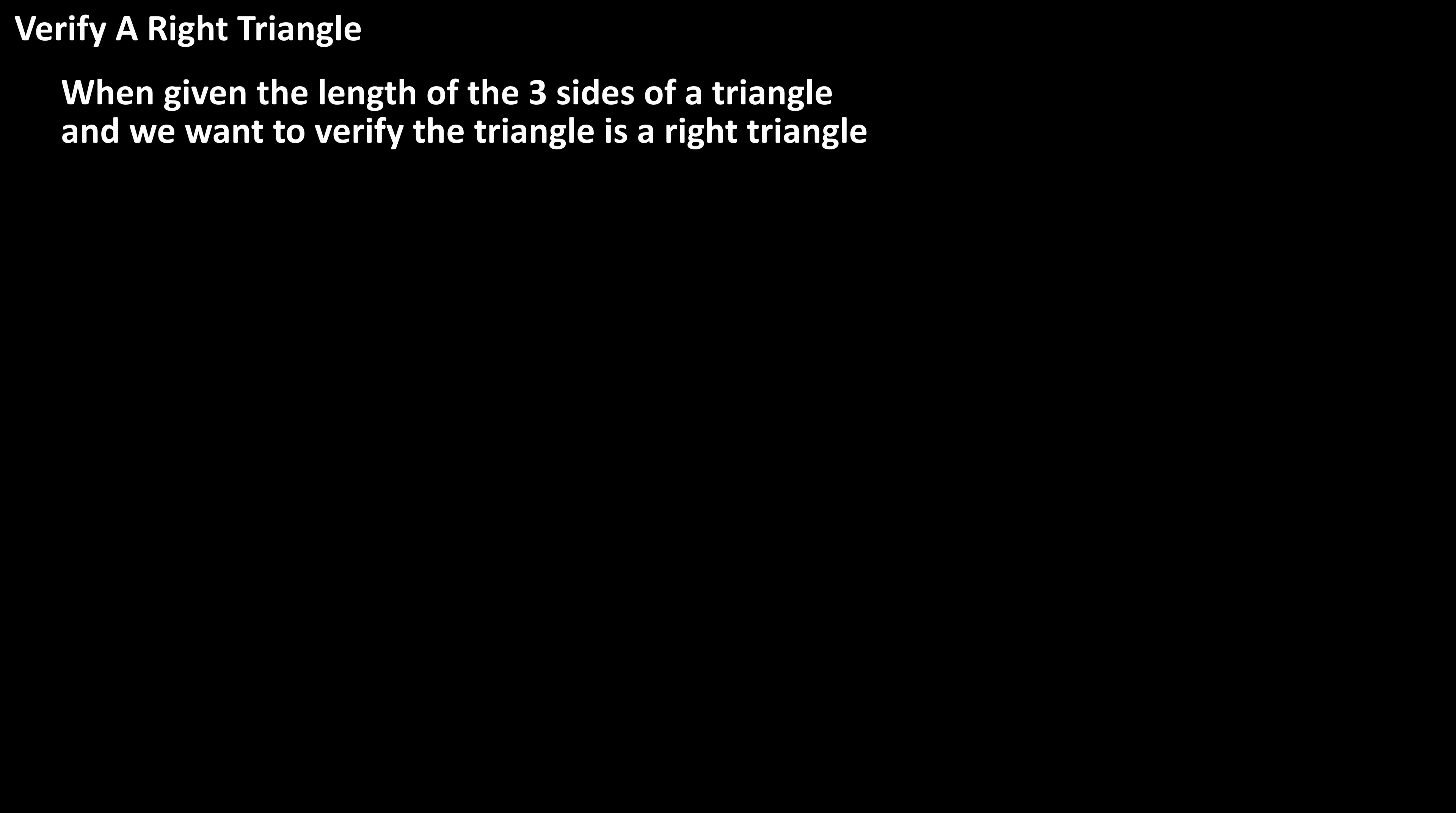When we are given the lengths of the three sides of a triangle and we want to verify the triangle is a right triangle, where one of the angles is equal to 90 degrees, we use the Pythagorean theorem.